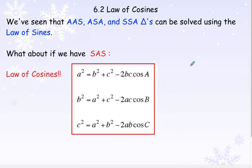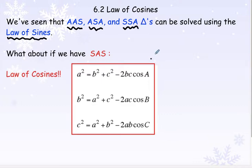So we have section 6.2. When we did 6.1, we did law of sines. Law of sines was useful when we had either two angles and a side, or two sides and an angle — and that was the case where we had to be careful. Now what we're going to look at today is when we have two sides and an angle where we would not be able to use law of sines in that scenario.